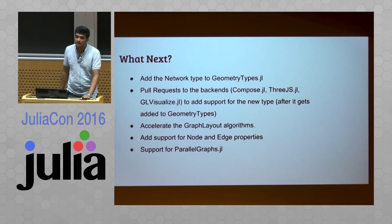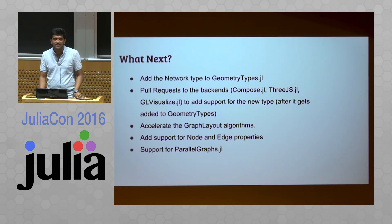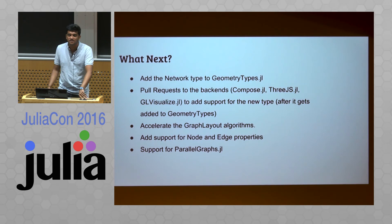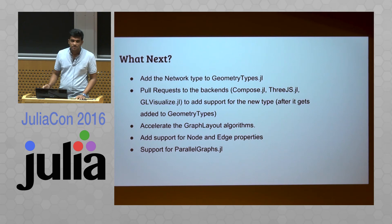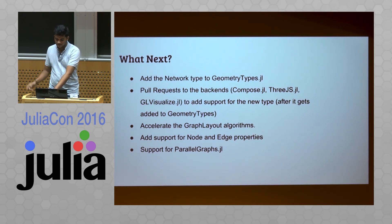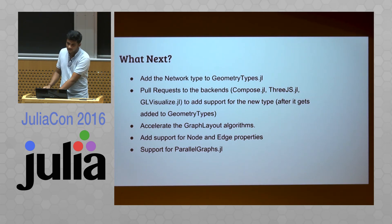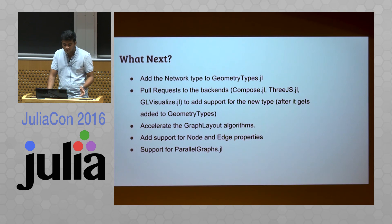The next part will be accelerating the graph layout algorithms. The current problem is that they're too slow — there's a cubic loop inside, so for 10,000 nodes it takes around two minutes, which is too slow for a visualization package. We'll accelerate it using either GPU or CPU acceleration. We'll also add support for node and edge properties including size, color, and related attributes, as well as support for ParallelGraphs.jl — another GSOC project by Pranav — which uses parallel processing to compute graph operations.